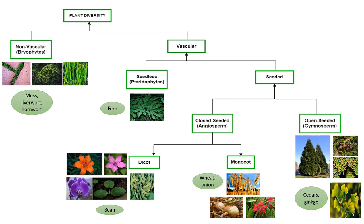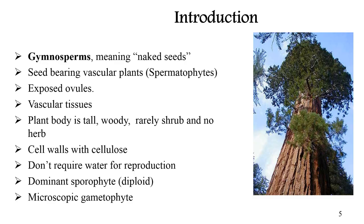Gymnosperms are the non-flowering plants. They are tall trees or bushes producing cones; seeds are not enclosed in fruits. The word gymnosperm means naked seeds and is derived from two Greek words: gymnos means naked and sperma means seed.